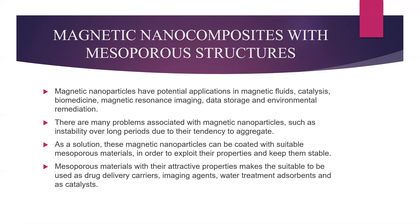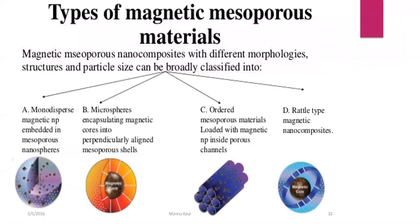Mesoporous materials with their attractive properties make them suitable as drug delivery carriers, imaging agents, water treatment adsorbents, and catalysts. Types of magnetic mesoporous structures include mono-dispersed magnetic nanoparticles embedded in mesoporous nanospheres, microspheres encapsulating magnetic cores into perpendicularly aligned mesoporous shells, ordered mesoporous materials loaded with magnetic nanoparticles inside porous channels, and rattle-type magnetic nanocomposites.